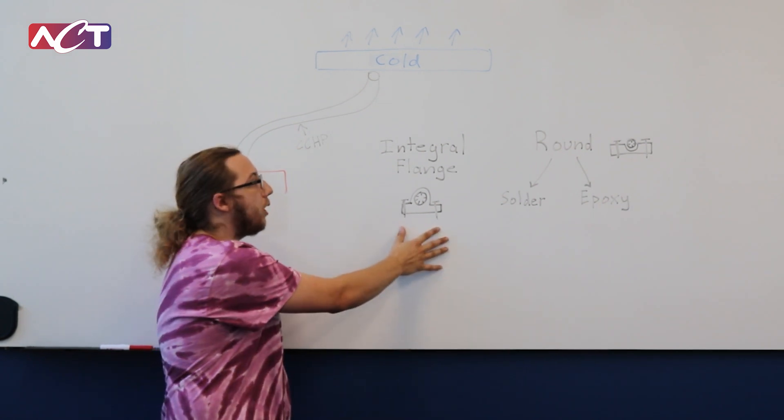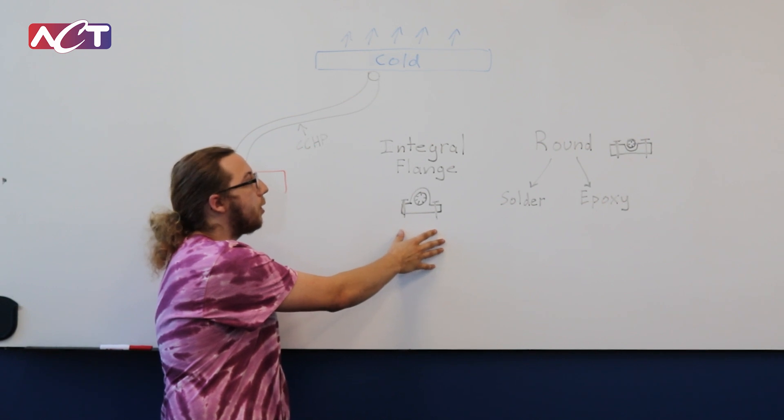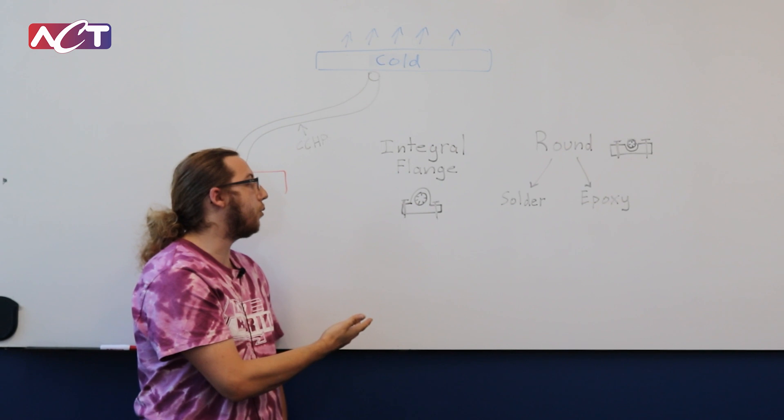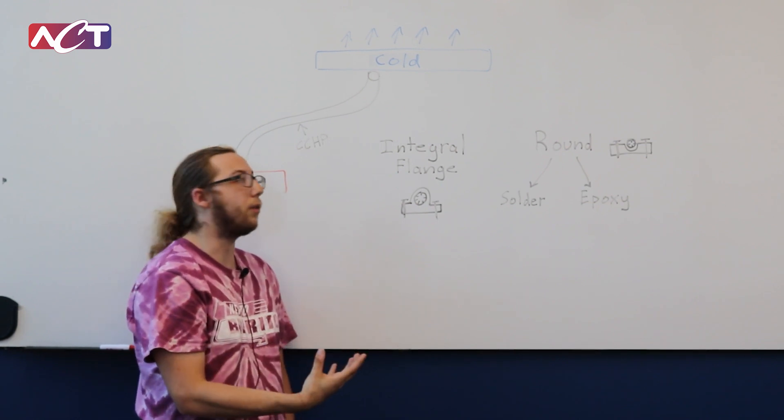So this is by far the easiest to manufacture because we don't need to go through any extra steps. It's all built right into the actual extrusion of the heat pipe itself.